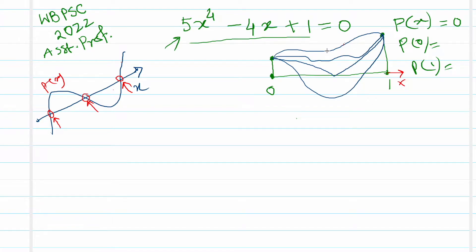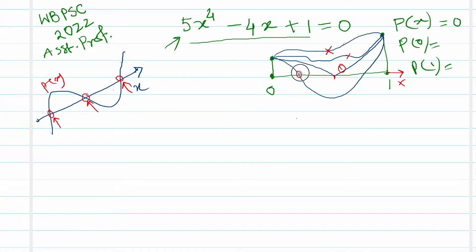If the graph stays above or below the x-axis without crossing, it has no zeros. If it just touches the x-axis, there is exactly one zero at that point. If it crosses below and comes back up, there are two zeros.